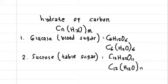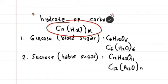Carbohydrates means hydrates of carbon and derives from the formula C_n(H2O)_n. For example, glucose or blood sugar C6H12O6 which can be written as C6(H2O)6. Sucrose or table sugar C12H22O11 which can be written as C12(H2O)11.